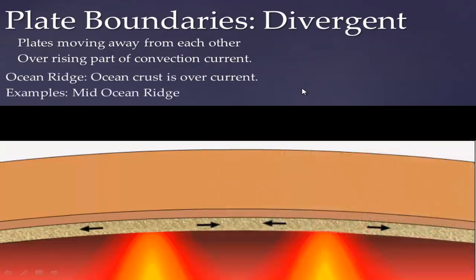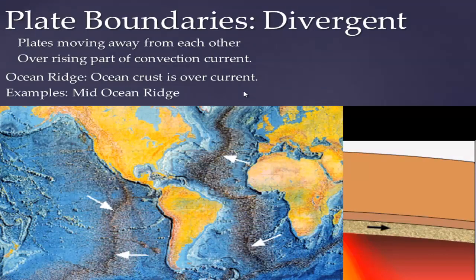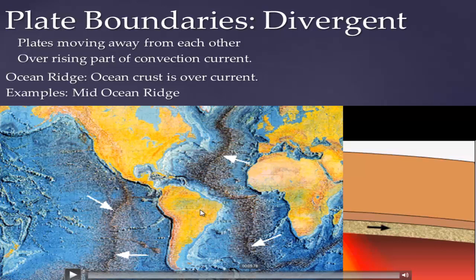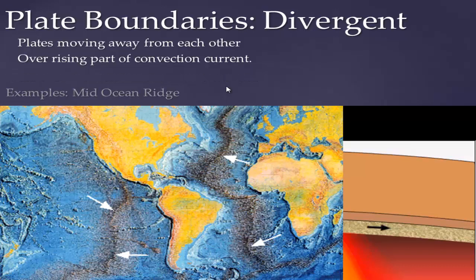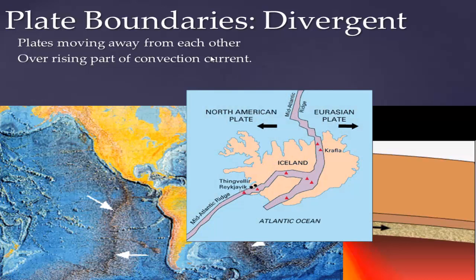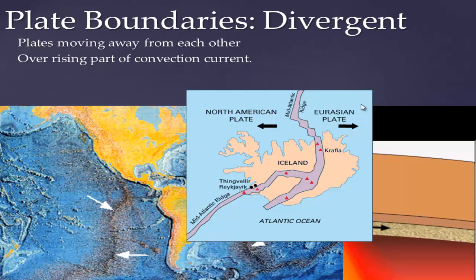Eventually it's no longer continental crust but ocean crust being pulled apart — a good example is the mid-ocean ridge. The mid-ocean ridge started when Pangea was ripped apart, separating the North American, Eurasian, and African plates. Iceland is actually part of the mid-Atlantic ridge, just above water. Half of Iceland is on the North American plate being pulled west, and the other half is being pulled east by the Eurasian plate.